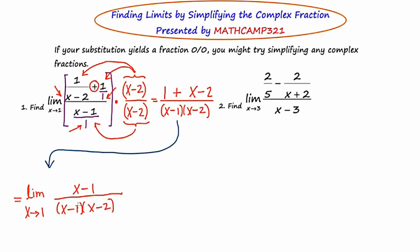The x minus 1s are going to cancel out because it exists on the numerator and the denominator. So now when I substitute in 1 for every occurrence of x, I'm going to have 1 on the top. And I'm going to have 1 minus 2 on the bottom. And that's going to result in a value of negative 1. So the answer to this first limit question is negative 1. And we're able to do it by simplifying the complex fraction.